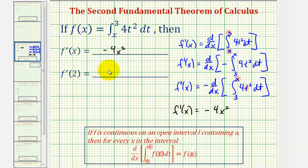Therefore f prime of two is equal to negative four times two squared. Two squared is four, and negative four times four is negative sixteen.